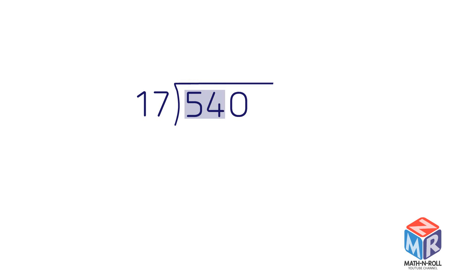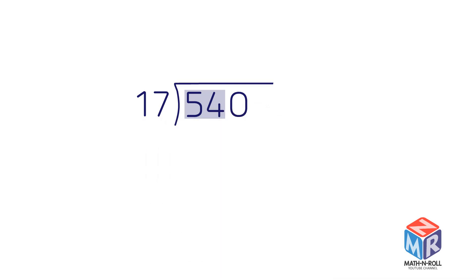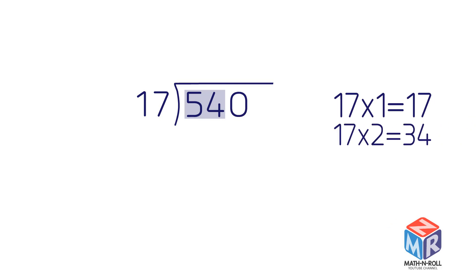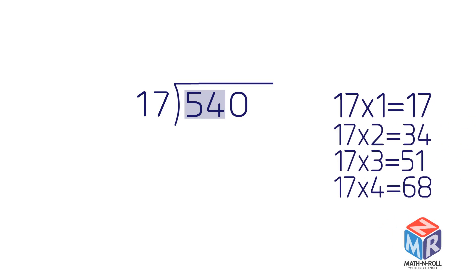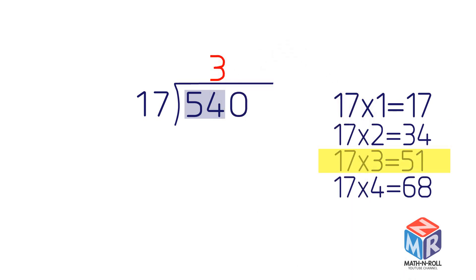Let's group the 5 and the 4 together. Now ask how many times 17 goes into 54 — that is, what's 54 divided by 17? We must figure it out by estimating. The answer is 3, with a remainder. So write 3 directly above the 4.